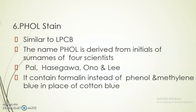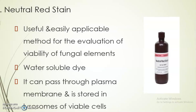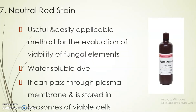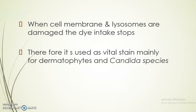The sixth stain is fall stain, which is similar to LPCB. The name 'fall' is derived from the initials of the surnames of four scientists: Pal, Hasagawa, Ono, and Lee. It contains formalin instead of phenol and methylene blue in place of cotton blue. The seventh stain is neutral red, a useful and easily applicable method for evaluating the viability of fungal elements. Neutral red is a water-soluble dye that can pass through the plasma membrane of the fungal cell and is stored in the lysosomes of viable cells. When the cell membrane and lysosomes are damaged, dye uptake stops, so non-living cells will not take up the dye. This allows us to easily differentiate viable and non-viable cells, and it is used as a vital stain mainly for dermatophytes and Candida species.